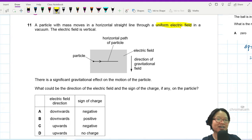Okay, so the electric field is vertical. There is significant gravitational effect. Significant, that means we cannot ignore gravity.